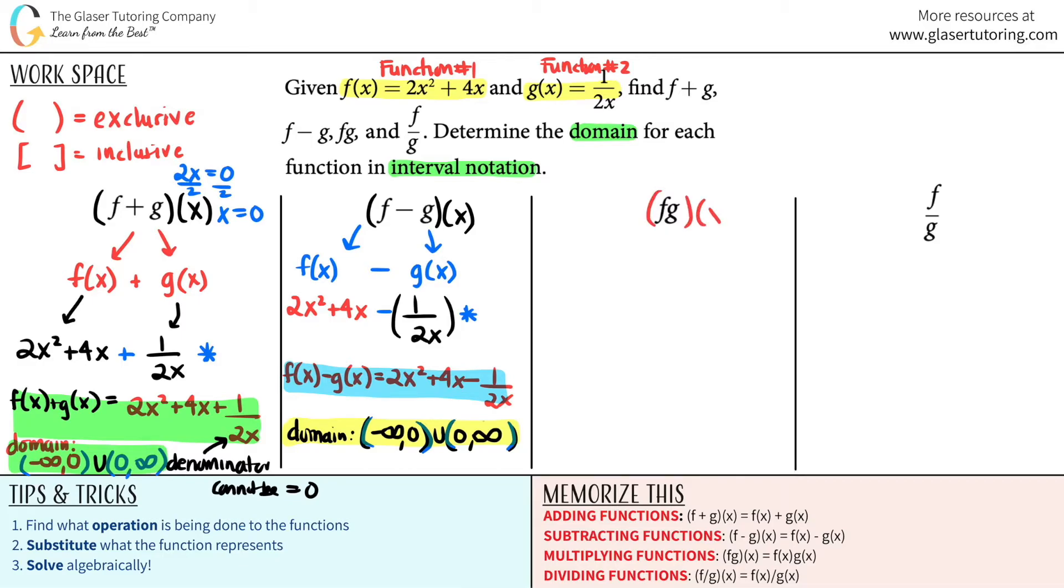Next one. f times g. So f times g of x. This is the same thing as saying f of x times g of x. What was f of x? f of x was the 2x squared plus 4x. And I will put this in parentheses just to keep everything nice and neat. And I'm multiplying this by g of x. g of x is 1 over 2x. Put a star here because this is what you're going to take from your domain.